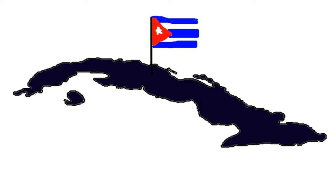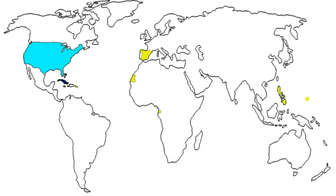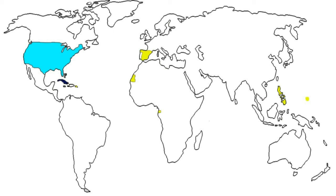The peace deal gave Cuba its independence, however they were under America's sphere of influence. The Spanish Empire had in effect ceased to exist after they gave the United States Puerto Rico, Guam, and the Philippines. However the revolutionary element in the Philippines remained, so the Americans had to fight a longer and more costly war with the Filipinos to assert their control.